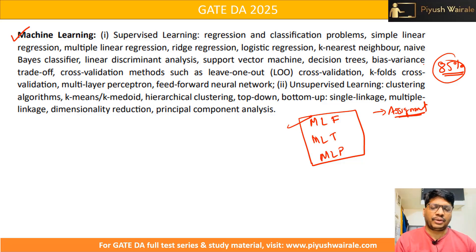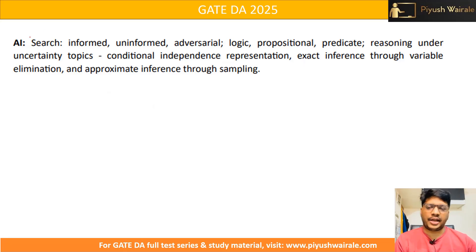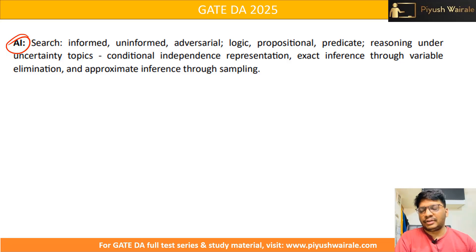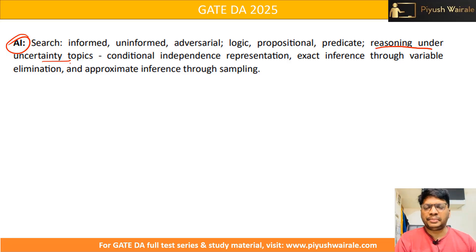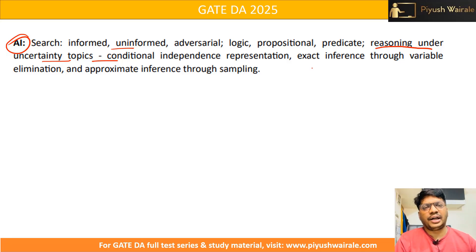For Artificial Intelligence, IITM BS does have an AI course, but it does not cover all topics. Specifically, topics related to reasoning under uncertainty are not covered in the IITM BS AI course and need to be studied separately. The remaining AI topics are covered. Since it is uncertain what types of questions will appear next year, it is best to go through the AI content and assignment questions thoroughly.